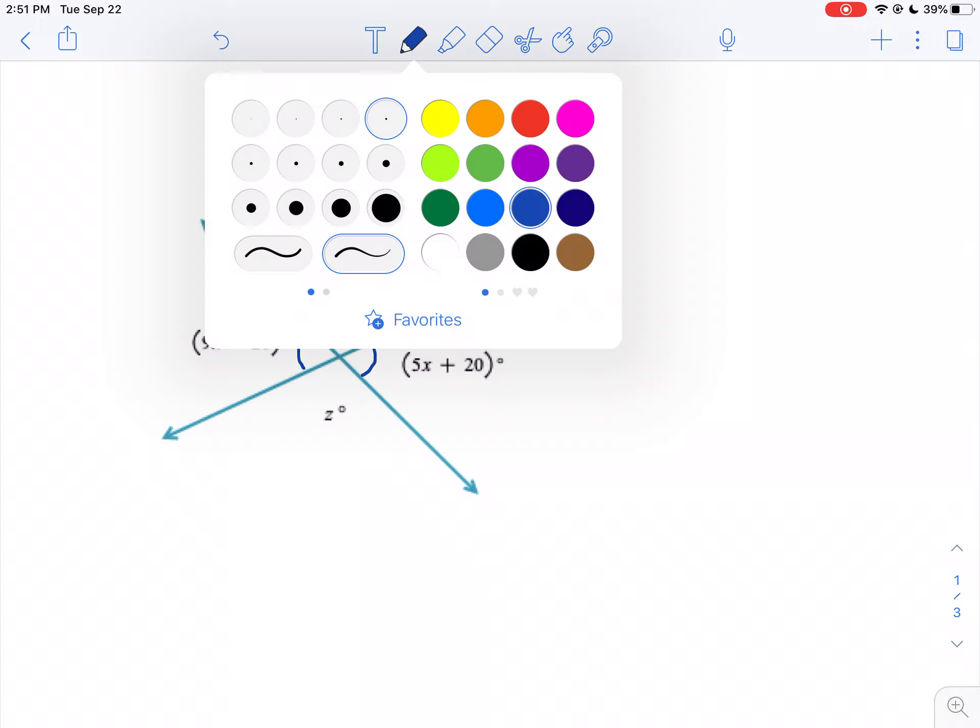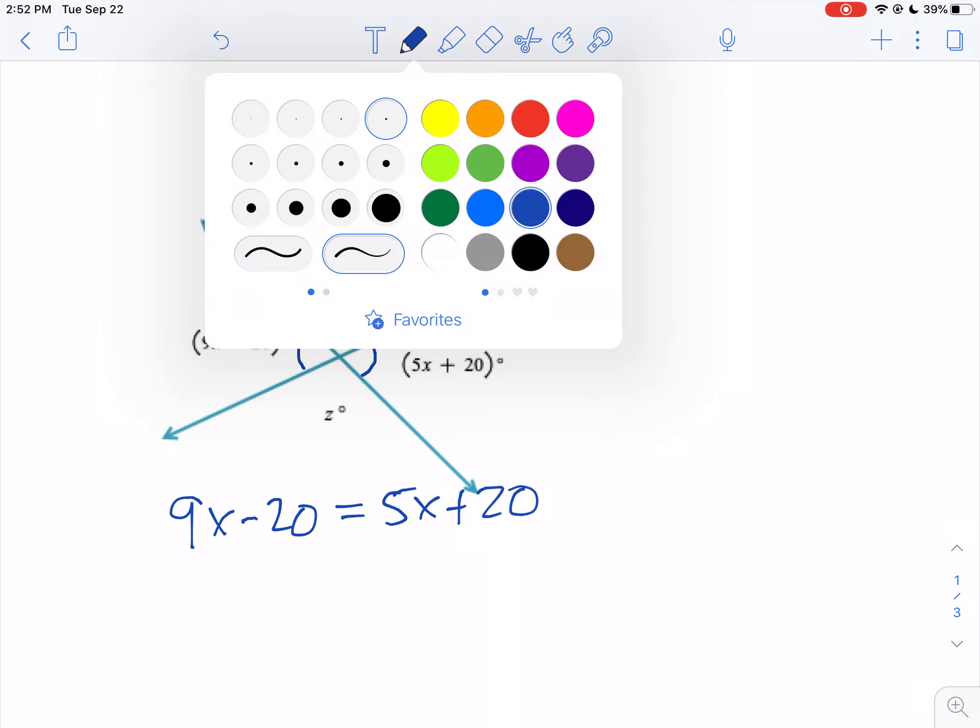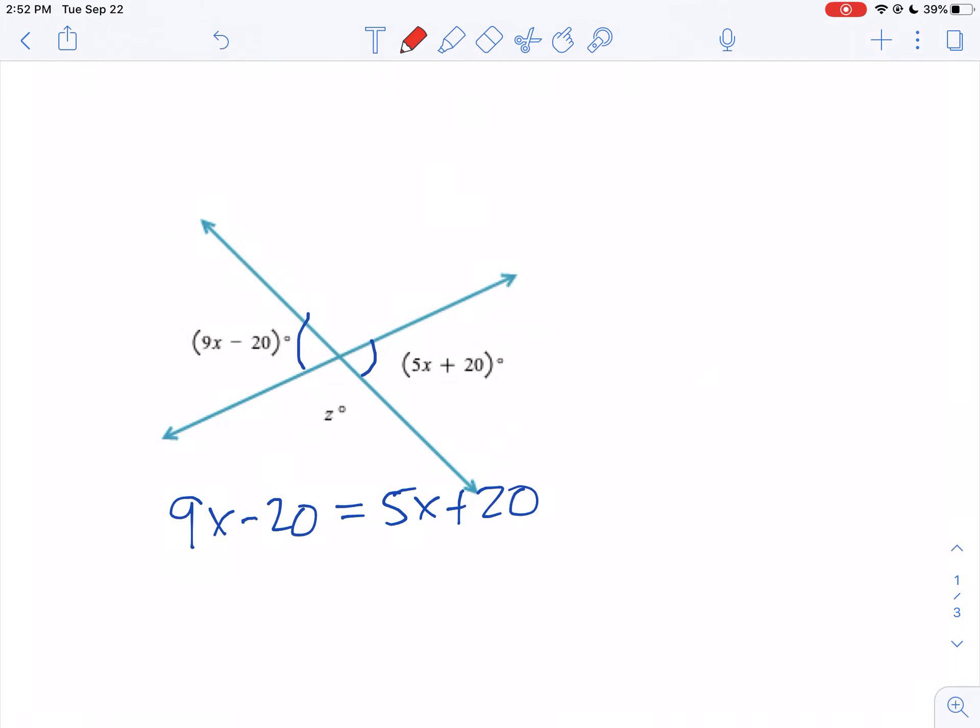So we're going to say 9X minus 20 equals 5X plus 20. Let's solve for X. We're going to move the smaller X over, so let's subtract 5X from both sides. 9X minus 5X is 4X. Bring down the negative 20.